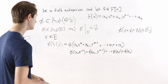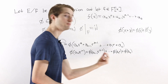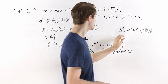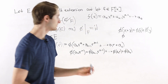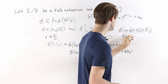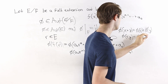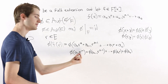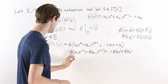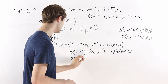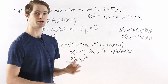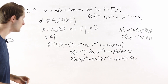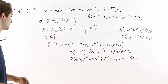Having split up the expression by applying phi to each term separately, we can do another step: in each term we are multiplying two things inside phi — for example a_n times r to the n. Another property of ring homomorphisms is that phi of x times y equals phi of x times phi of y. So we can split phi of a_n times r to the n as phi of a_n times phi of r to the n, and similarly for all other terms.